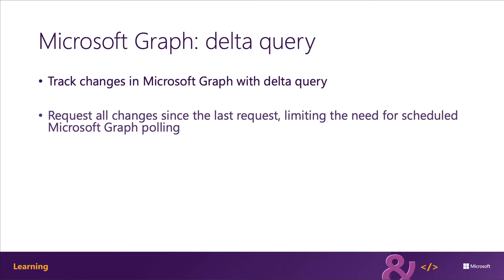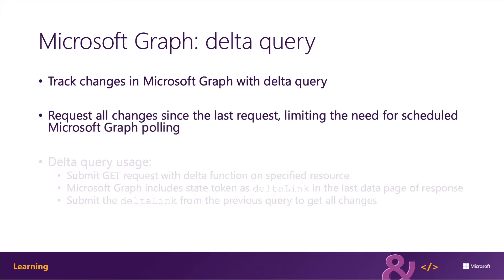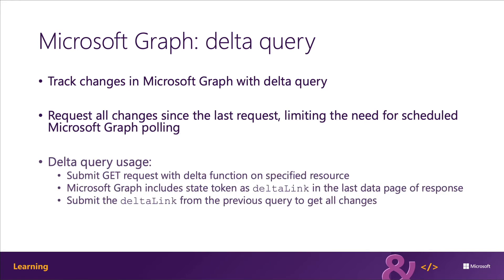Delta query works using the concept of a state token. An application will issue an initial request to Microsoft Graph the same way it normally does, except that it will include the Delta link function in the request. Microsoft Graph will respond with the requested data as normal, except the last page of data will include the extra property Delta link, which contains the endpoint with the state token of the Delta query.